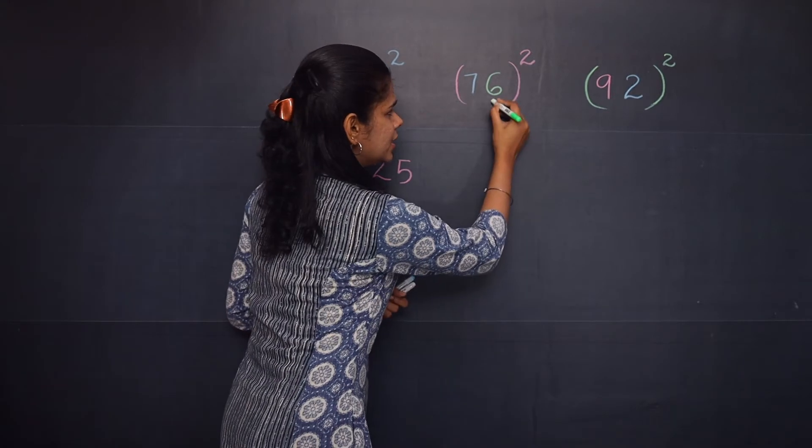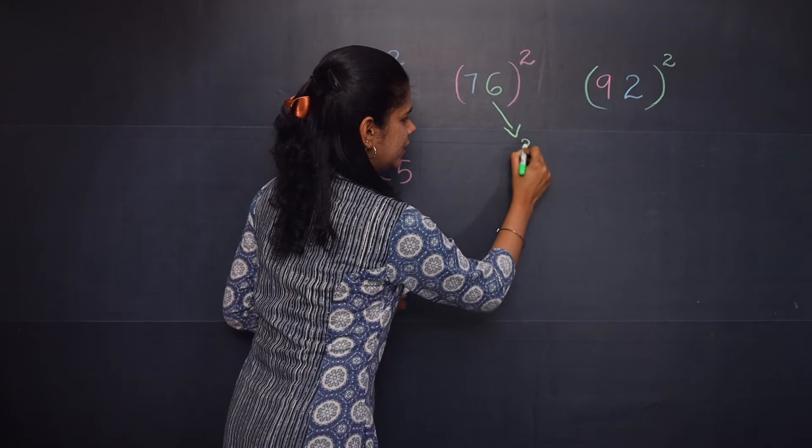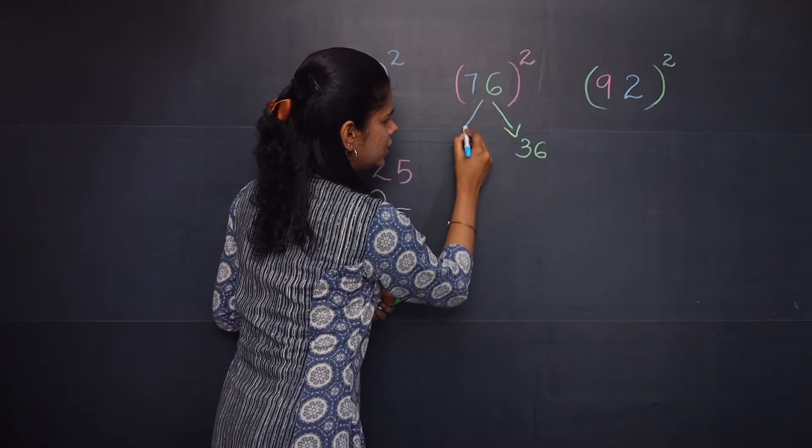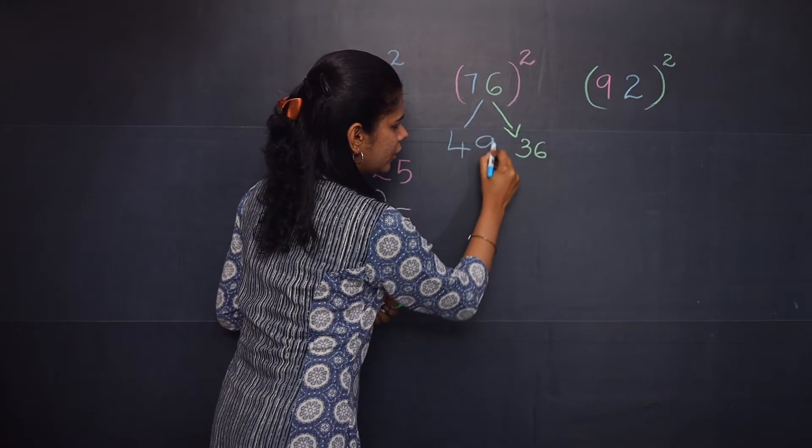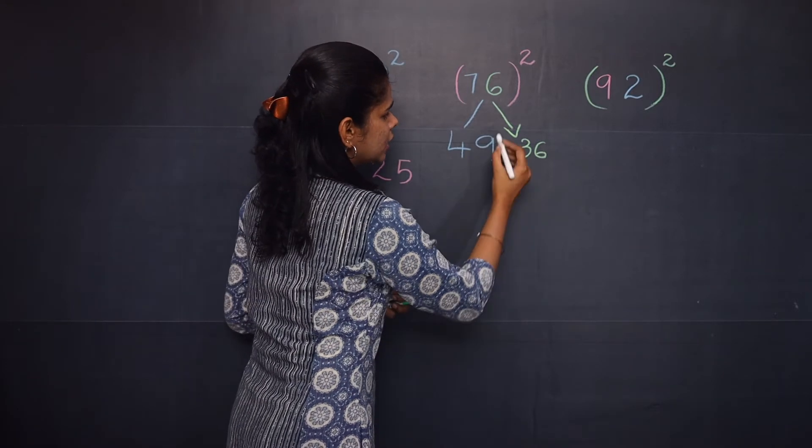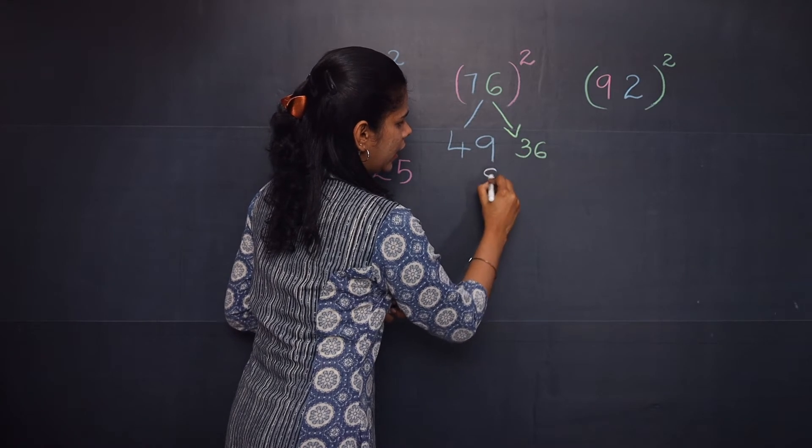Here 6 square is 36 and 7 square is 49. Now you will multiply 7 into 6 into 2, and that is 84.